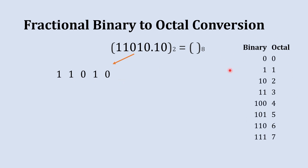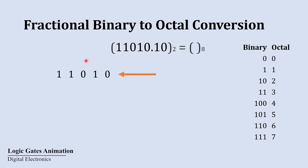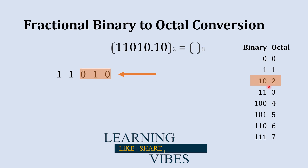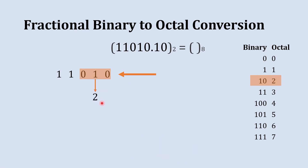Here is our binary to octal conversion table, just for reference. Now from this side we are going to start creating a group of three digits. The first group of three digits is 010. The octal equivalent to binary 010 is 2, so we are going to write 2 below it.